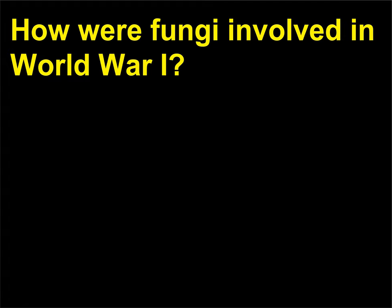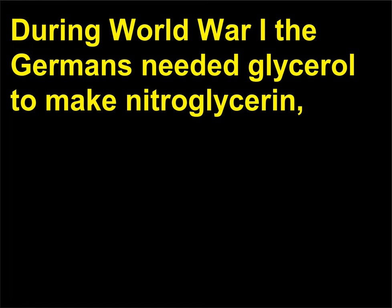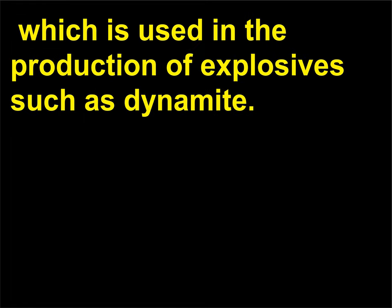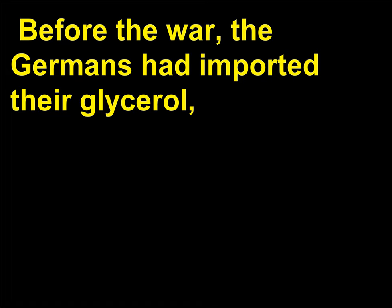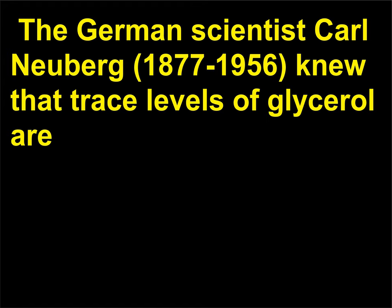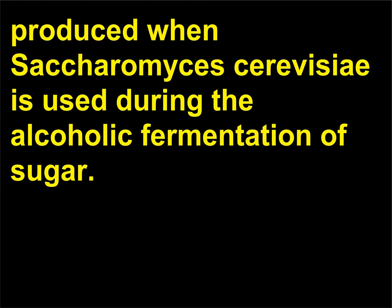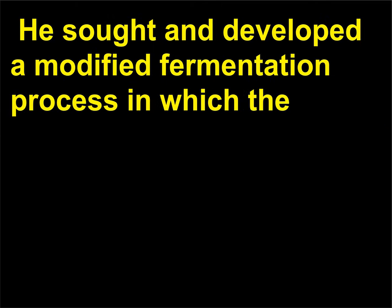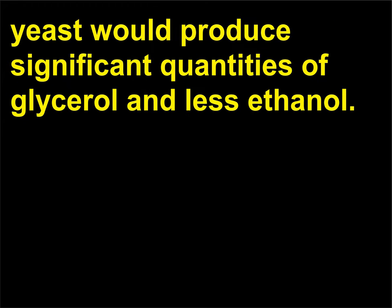How were fungi involved in World War I? Glycerol is used in the production of explosives such as dynamite. Before the war, the Germans had imported their glycerol, but the British naval blockade during the war prevented such imports. The German scientist Carl Neuburg, 1877-1956, knew that trace levels of glycerol are produced when Saccharomyces cerevisiae is used during the alcoholic fermentation of sugar. He sought and developed a modified fermentation process in which the yeast would produce significant quantities of glycerol and less ethanol.